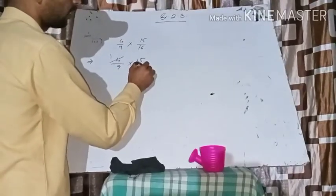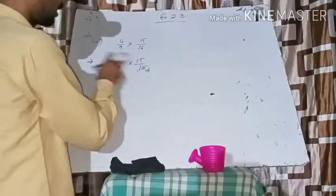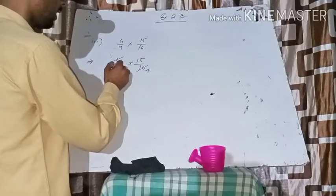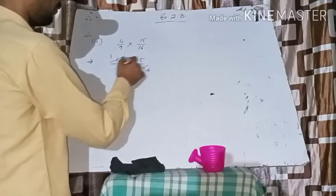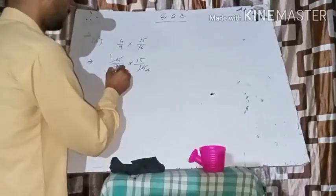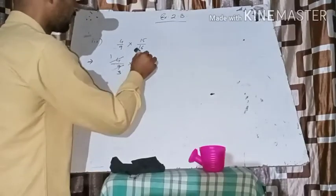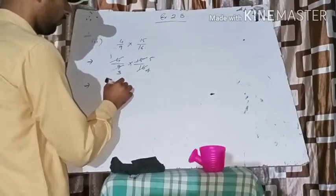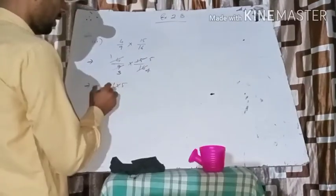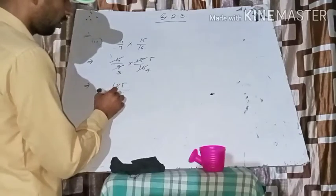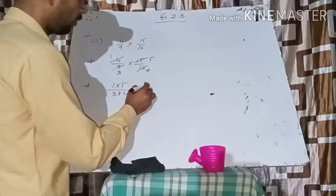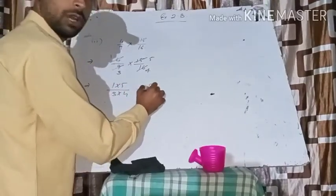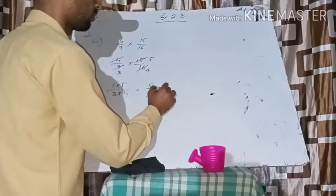Divide fifteen and nine by three. So three, nine; three, fifteen. Now we get one into five, and in denominator we got three into four. It becomes five by twelve. That's your answer.